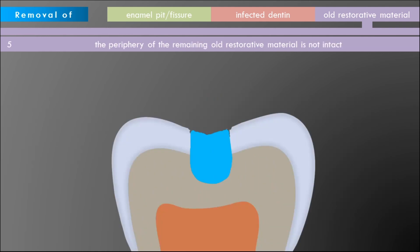The fifth indication for removal of old restorative material is when breaches or ditches are visible at the periphery of the old restoration — when the margin is not intact. This can lead to formation of secondary caries, and in those situations the entire restoration must be removed and replaced with a new one.